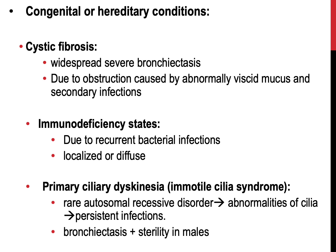Immunodeficiency states are another example in which localized or diffuse bronchiectasis develops because of recurrent bacterial infections. Primary ciliary dyskinesia, also called immotile cilia syndrome, is a rare autosomal recessive disorder associated with bronchiectasis and sterility in males. It is caused by an inherited abnormality of the cilia, which impairs mucociliary clearance of the airways, leading to persistent infections.